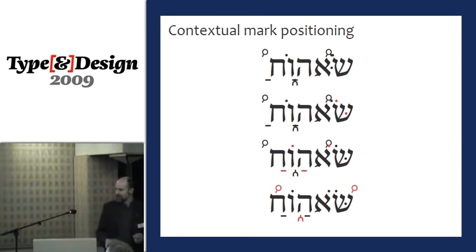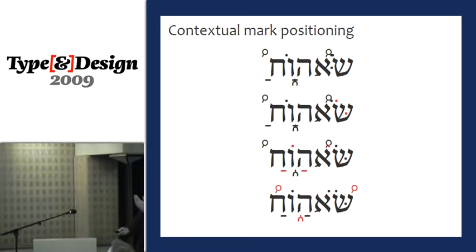Finally the cantillation marks are added. The same cantillation mark can sit on the right-hand side of a letter at the beginning of a word, or in the centre elsewhere. You also notice that the patah vowel sign has moved to the right to accommodate the cantillation mark next to it. These are the kinds of things that need to happen automatically.